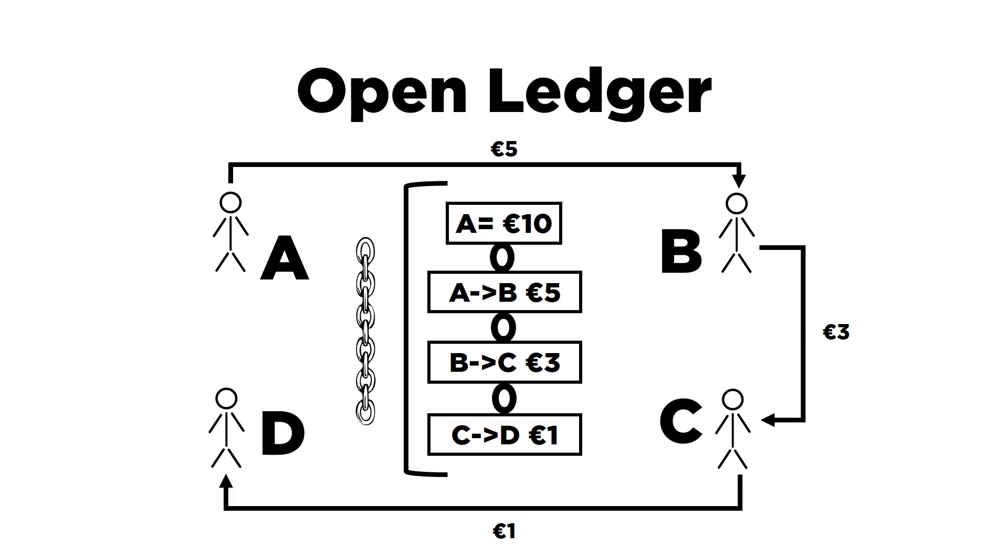For instance, A tries to send 20 euros to D. It will not be added to the ledger because it's not a valid transaction. Everyone in the network knows that now A has only 5 euros. Therefore, this transaction will not become part of the chain.